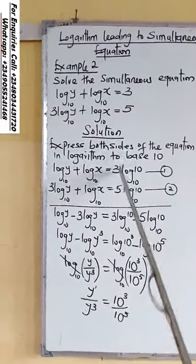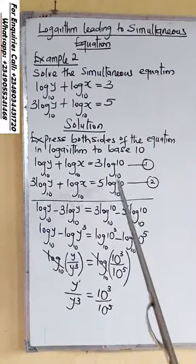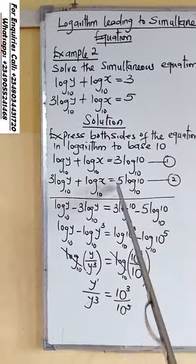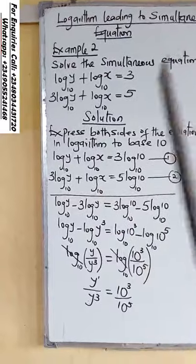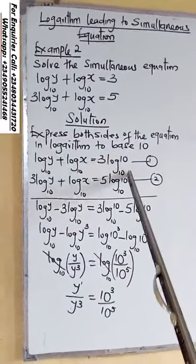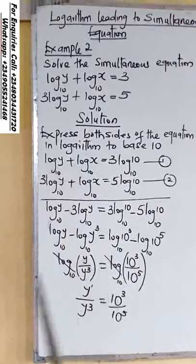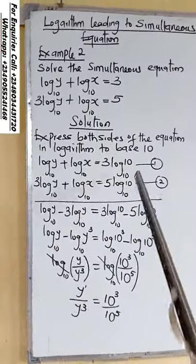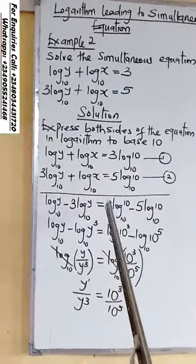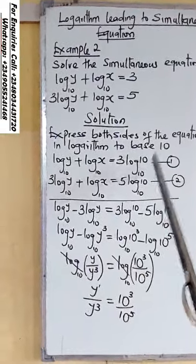So 1 times 3 is still 3, and 1 times 5 is still 5. We decide to use log 10 base 10 because the base on the other side is 10. If the base were 2, you would use log 2 base 2 instead.